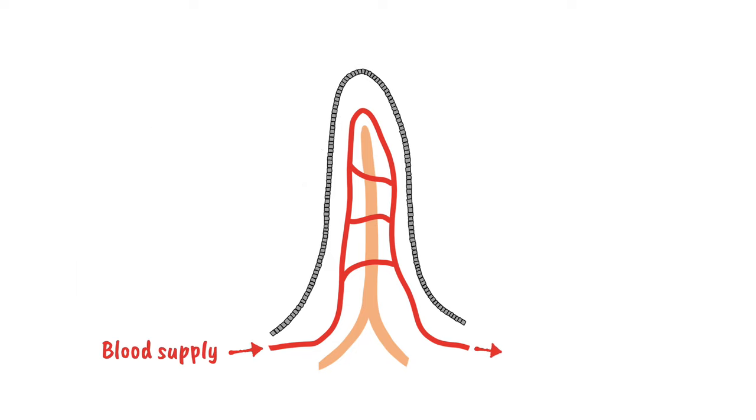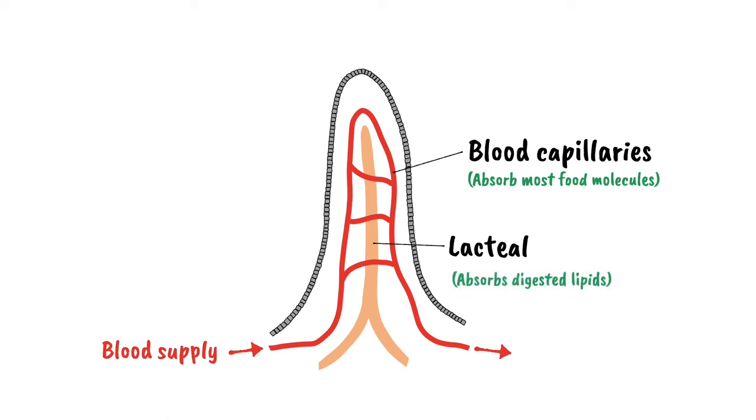Villi have a good blood supply constantly flowing in and out through many blood capillaries. Most materials are transferred to the blood capillaries. There's also a structure inside each villus called a lacteal and the products of lipid digestion are absorbed into this part, and from there they'll also eventually reach the bloodstream at a different point.